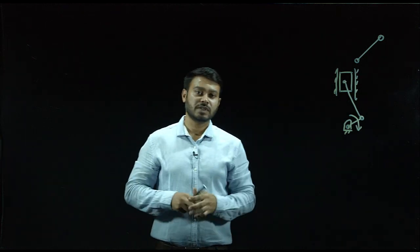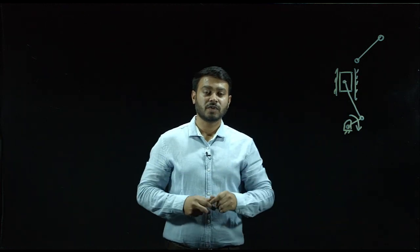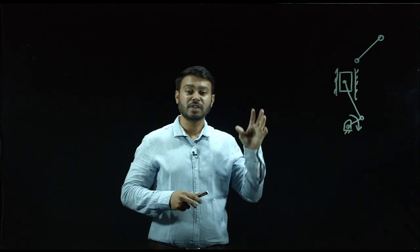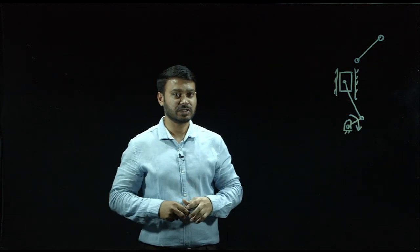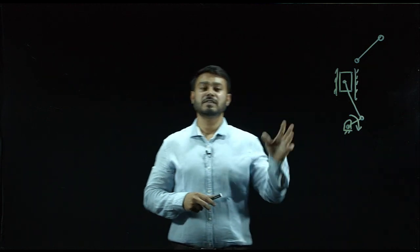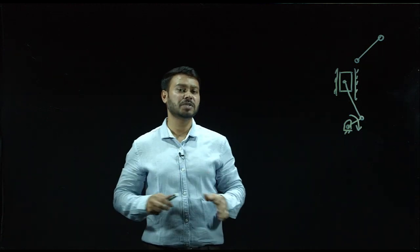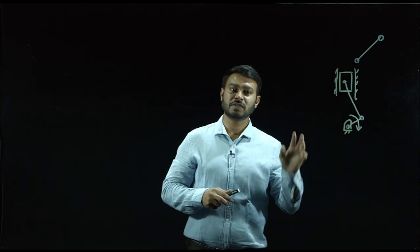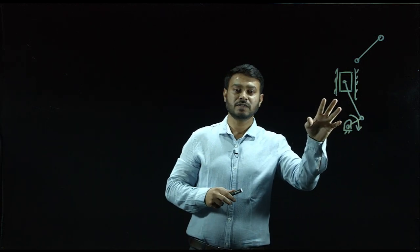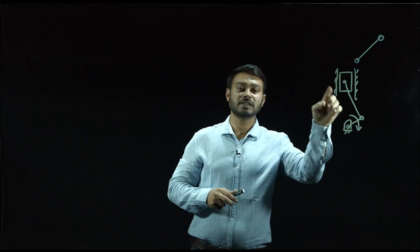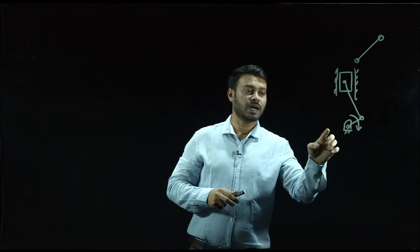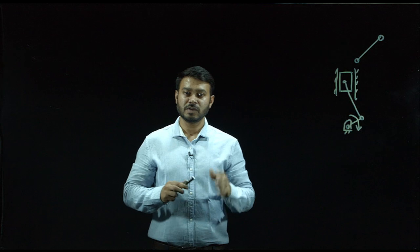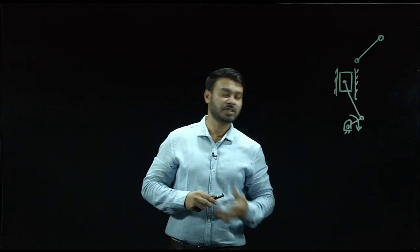The next terminology is mechanism. When one part of a kinematic chain is fixed, then this is called a mechanism. In every mechanism, there is one part which is fixed — in this diagram, the cylinder and crankshaft are fixed. There is always a fixed link in a mechanism or a machine.